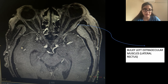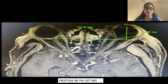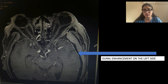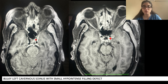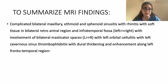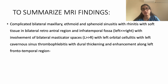Since there is no enhancement of the optic nerve, it rules out the possibility of optic neuritis, which is also a complication of rhinocerebral mucormycosis. There was proptosis on the left side. Due to spread through erosion in the cribriform plate, there was neuroparenchymal involvement indicated by dural enhancement on the left side. Cavernous sinus thrombosis is one of the complications of rhinocerebral mucormycosis. In our case, we could see a bulky left cavernous sinus with a small hypointense filling defect. There was diffuse subcutaneous edema. To summarize MRI findings: complicated bilateral maxillary, ethmoid, sphenoid sinusitis with soft tissue in bilateral retroantral region and infratemporal fossa left more than right, involvement of bilateral masseteric spaces left more than right, left orbital cellulitis, left cavernous sinus thrombophlebitis, with dural thickening and enhancement along the left frontotemporal region.